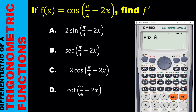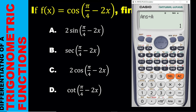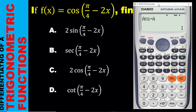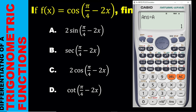Let's now move to the next question. The next question says: if F of X is equal to cos bracket open pi over 4 minus 2X bracket close, find F prime. Notice that F prime is the same as finding dy/dx. As we did in the previous example, we are going to actually differentiate this question. Make sure your calculator is in radian mode — if you see R, that means you are there.